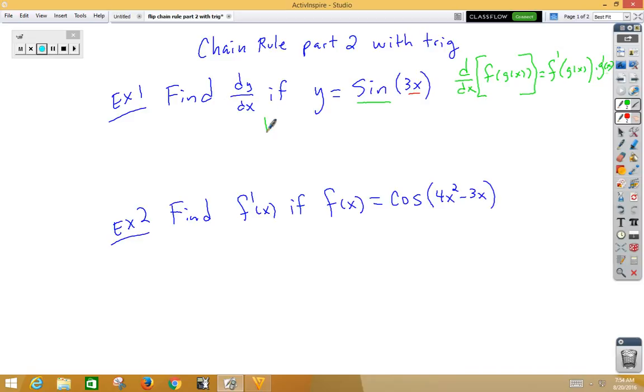So we would take dy/dx is equal to, derivative of sine is cosine. Don't change the inside. And we're going to multiply by the derivative of the inside, which would be 3.